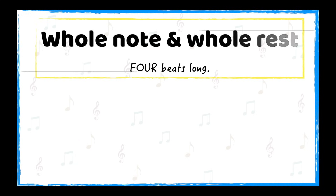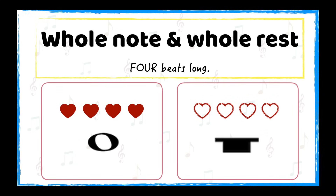A whole note and a whole rest have four beats. Therefore, when counting a whole note, we use four numbers like in this example. To show that we hold and sing or play throughout all four counts, we use a hyphen between the numbers. The same goes for a whole rest, but we also add parentheses around the numbers to show that we are silent for four counts.